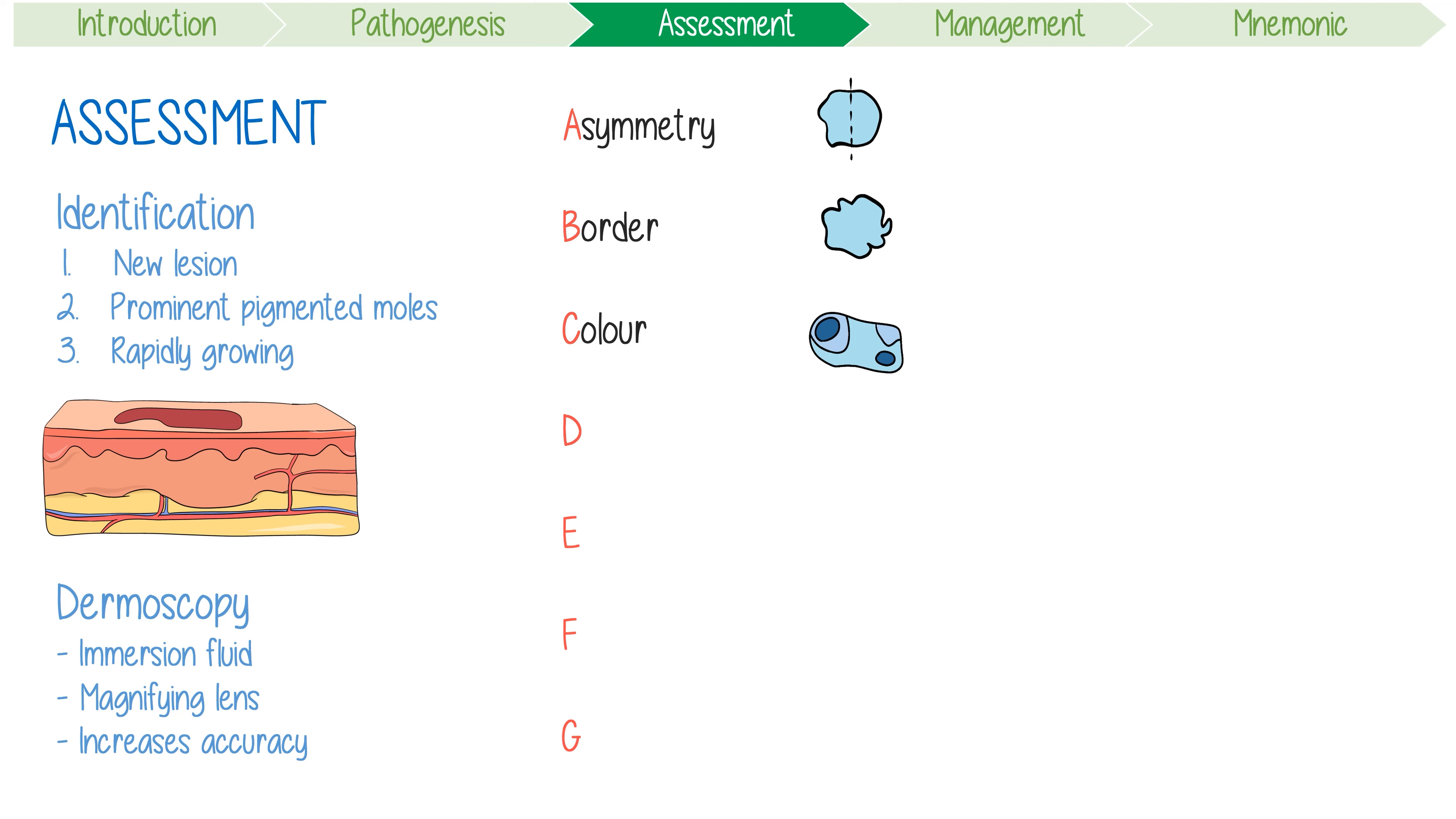D is for diameter - is the lesion greater than six millimeters? E is for elevated - note if the lesion is raised and palpable. F is for firm - hard lesions are much more likely to be malignant while wobbly ones tend to be benign. G is for growing - rapidly evolving lesions are significantly concerning.